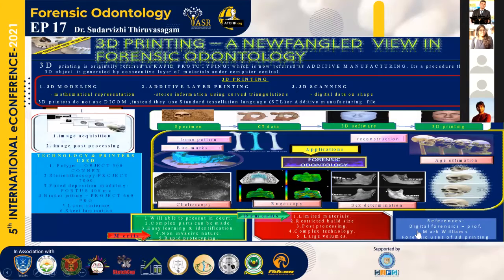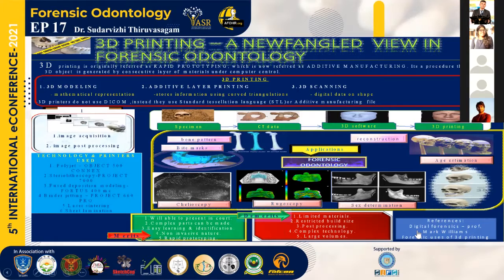Coming to the application of 3D printing in forensic odontology: mainly in the case of bite marks, since soft tissues are inadequate for long-term preservation, digital scanning of bite marks gives the exact dentition of the victim or suspect. The second is bone patterning, by which fractures or defects in bone can be visualized. Third is facial reconstruction, where skeletal structures are built up to facial structures. Fourth is age estimation, as certain bone structures differ at different ages.